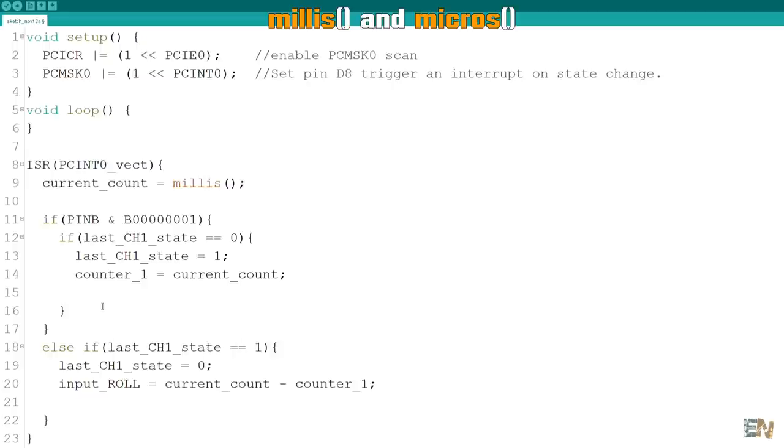The micros function will update its value within the ISR but it will start giving inaccurate time measurements past the 500 microseconds range. As a result, the delay microseconds function works in that time range. Although we should not use it because we should not introduce delays in the ISR.